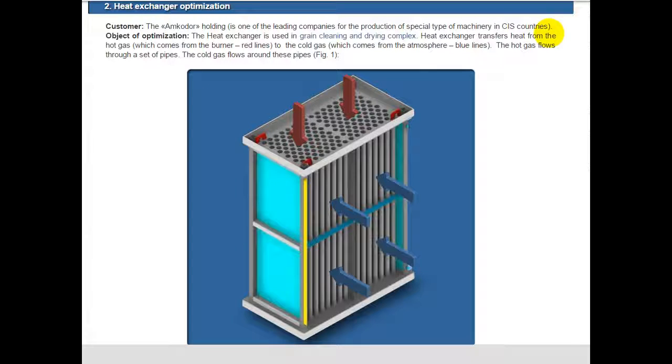Hello dear friends, in this video I will describe the process of heat exchanger optimization. The object of optimization is a heat exchanger used in a grain drying complex. The heat exchanger transfers heat from the hot gas which comes from burning (red lines) to the cold gas which comes from the atmosphere (blue lines).